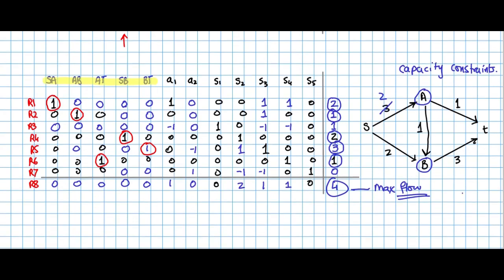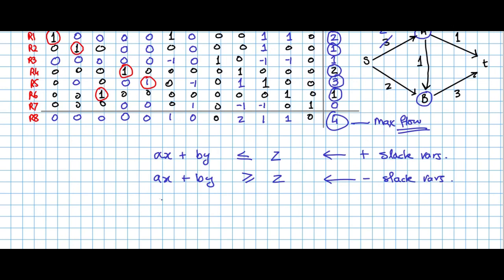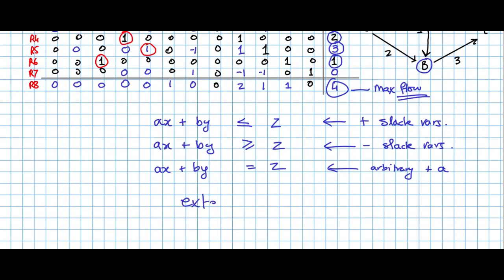In conclusion, when we have relations of the form AX + BY ≤ Z, we add slack variables. When we have AX + BY ≥ Z, we subtract slack variables. And when we have AX + BY = Z exactly, we include arbitrary dummy variables just to construct a full basis. With some modifications, this approach can be extended to other variants of the max flow problem. That concludes this part of the lecture.